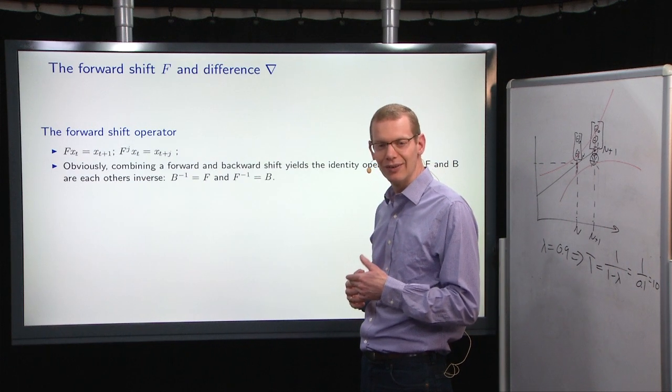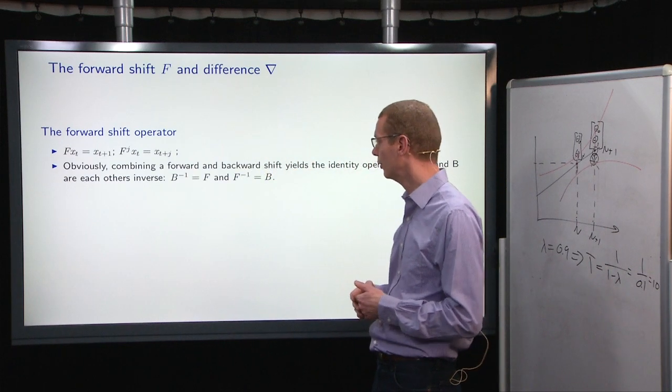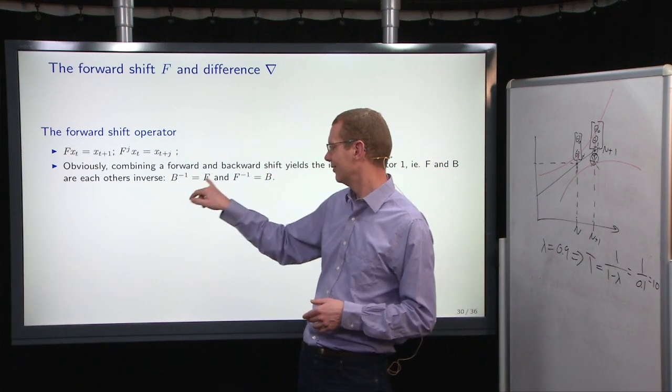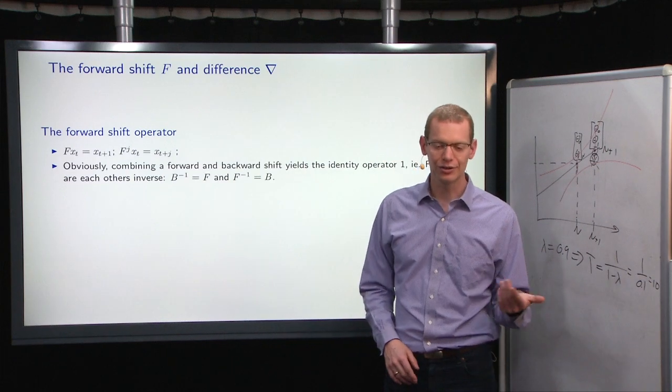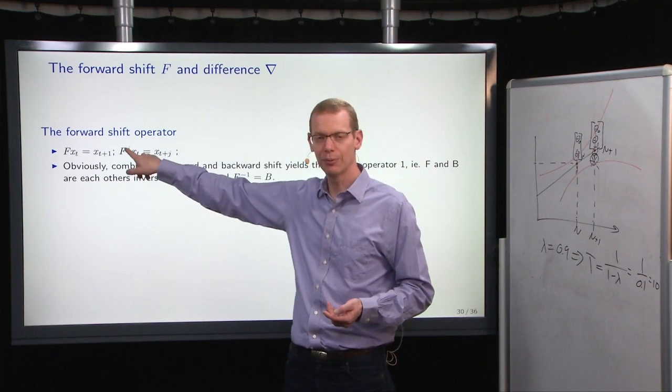Now, what is the inverse of going forward? That is to go backward. So they are obviously each other's inverse. If you take j to be a negative value up here, say F to the minus first,